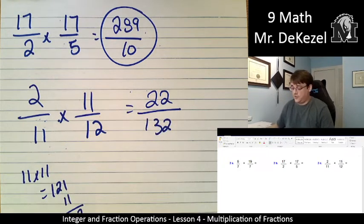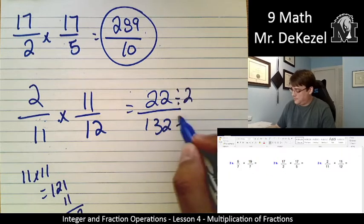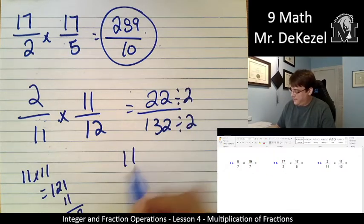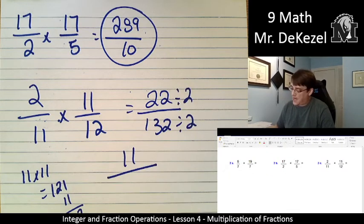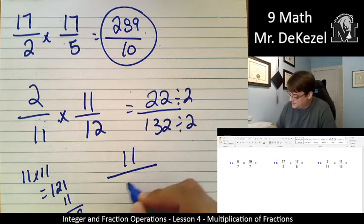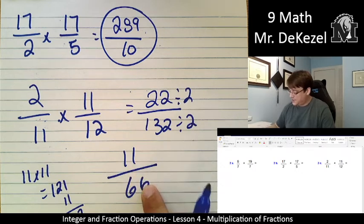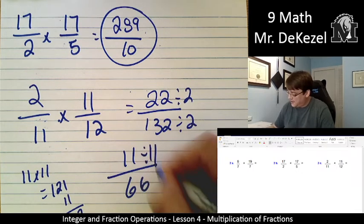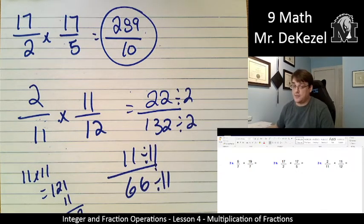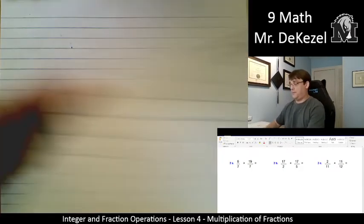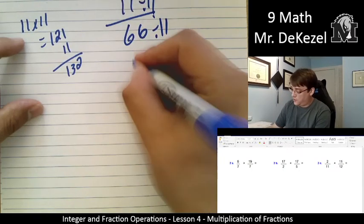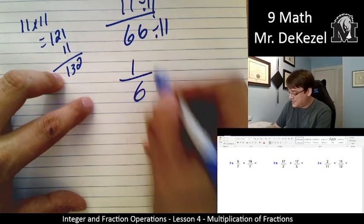And I know that I can then reduce that because they are both even. So that would be 11 over, what is half of 132? It would be 66. And actually it looks like I can reduce that even further. 11 over 66. I can divide both of these by 11. This is actually shocking to me as I am going through here because I have not done this question yet. But 11 divided by 11 is 1, and 66 divided by 11 is 6. This is 1 sixth.